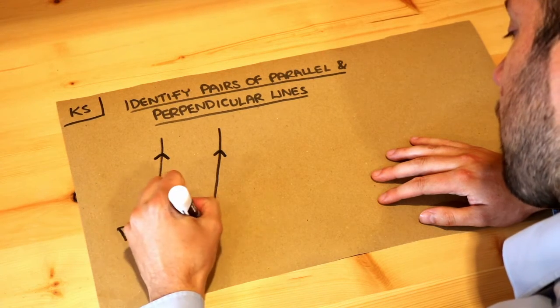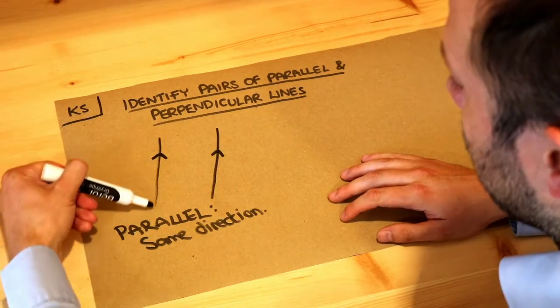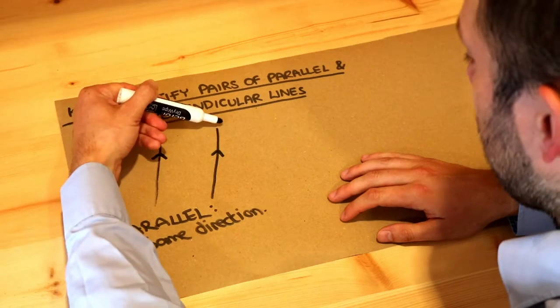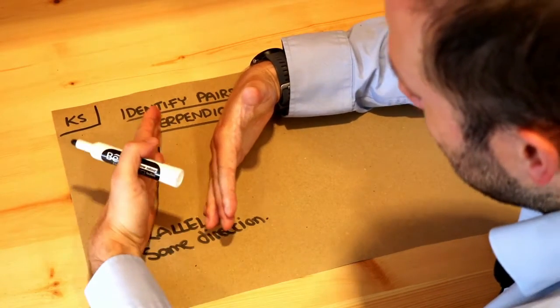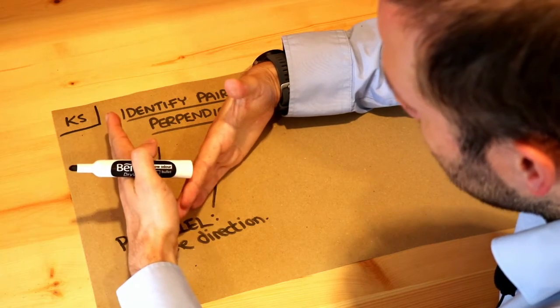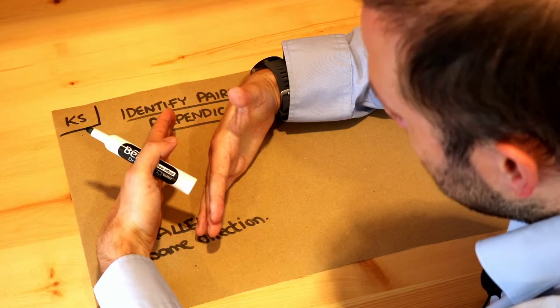It could actually also mean they're going in opposite directions. Like, it could be that one car is going in this direction, another car is going in this direction, but they're still parallel to each other because the lines are not getting closer to each other, they're not getting further from each other, they're staying the same distance from each other.